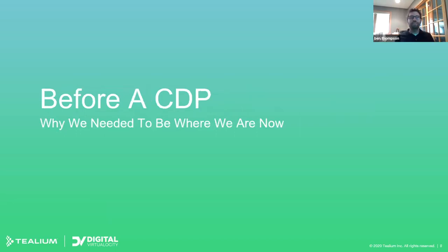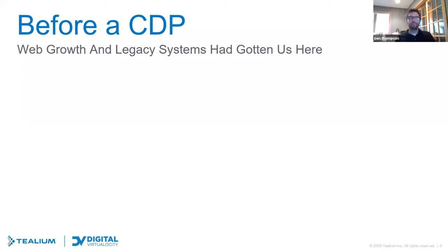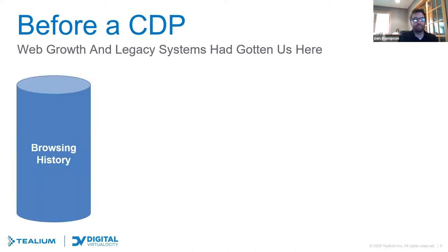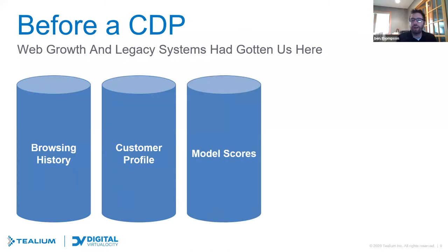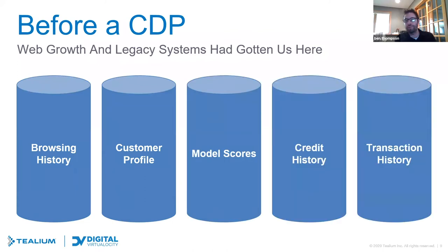Let's start with how things looked prior to the CDP at Bluestem. Before our CDP, our growth online combined with a lot of old systems piled upon each other had gotten us here. We had lots of data but in silos that required a lot of joining and processing. At Bluestem we have many of those silos like browsing history, customer profile, modeling scores, credit history, and of course transaction history.